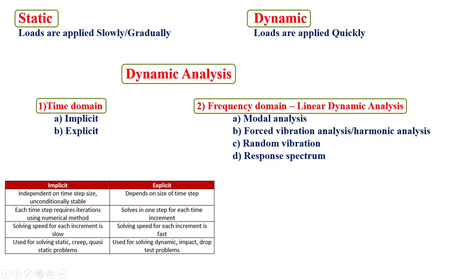Harmonic analysis helps extract stress-strain curves and check how a component behaves — at what frequency maximum displacement occurs, so we can avoid that frequency. Random vibration analysis is used for shock absorbers and car suspensions. Response spectrum analysis is used for earthquake loading. All of these fall under frequency domain analysis.